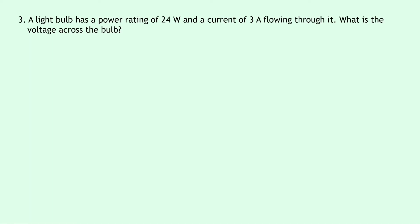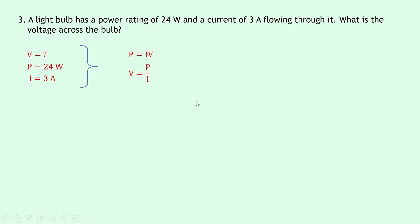Lastly, question three says that a light bulb has a power rating of 24 watts and a current of 3 amps flowing through it. What is the voltage across the bulb? Writing down what we know: we're trying to find the voltage V, the power P is 24 watts, and the current I is 3 amps. Our equation is P = IV. Rearranging for V by dividing both sides by I gives V = P/I. Substituting in gives 24 divided by 3, which gives a final answer of 8 volts.